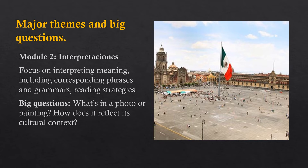Module two: Moving from description to interpreting meaning, module two focuses on related phrases and grammars, as well as basic cultural features of the Spanish-speaking world. For example, building on your ability to describe the location, activities, and state of peoples and objects in a photo, you will read about the origins of the architectural motif depicted. We'll introduce and practice practical strategies for reading Spanish, laying the foundation for success in higher-level, more content-focused Spanish study. Big questions: What's in a photo or painting? How does it reflect its cultural context?